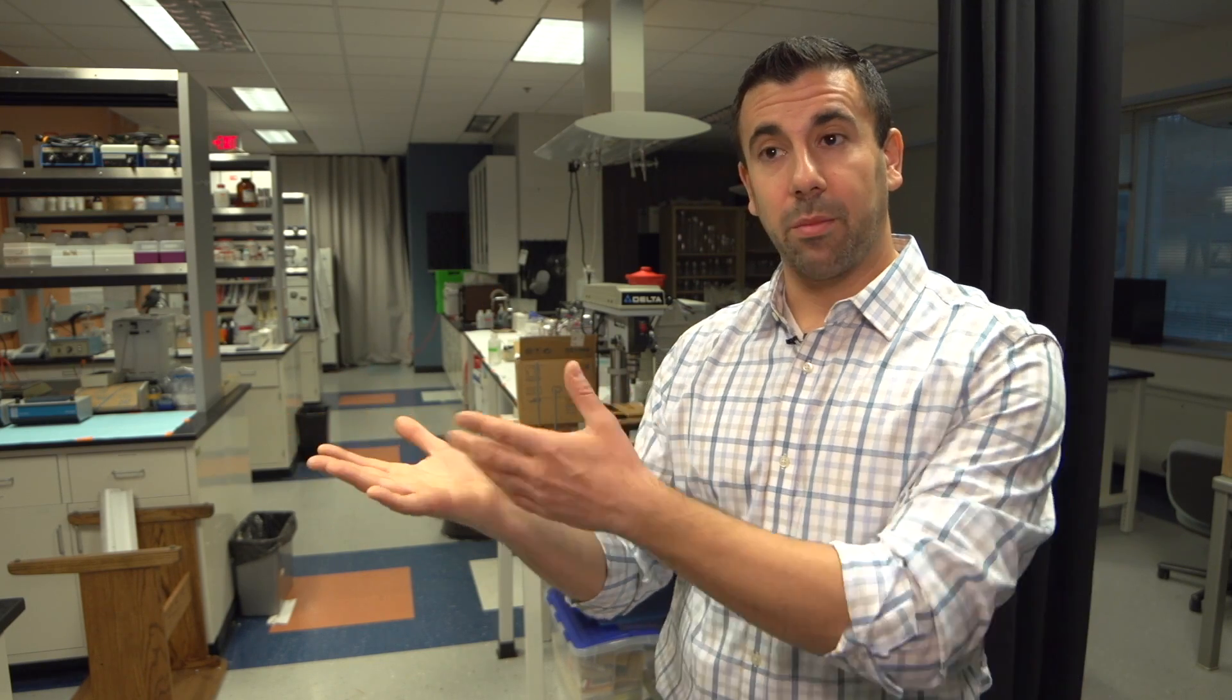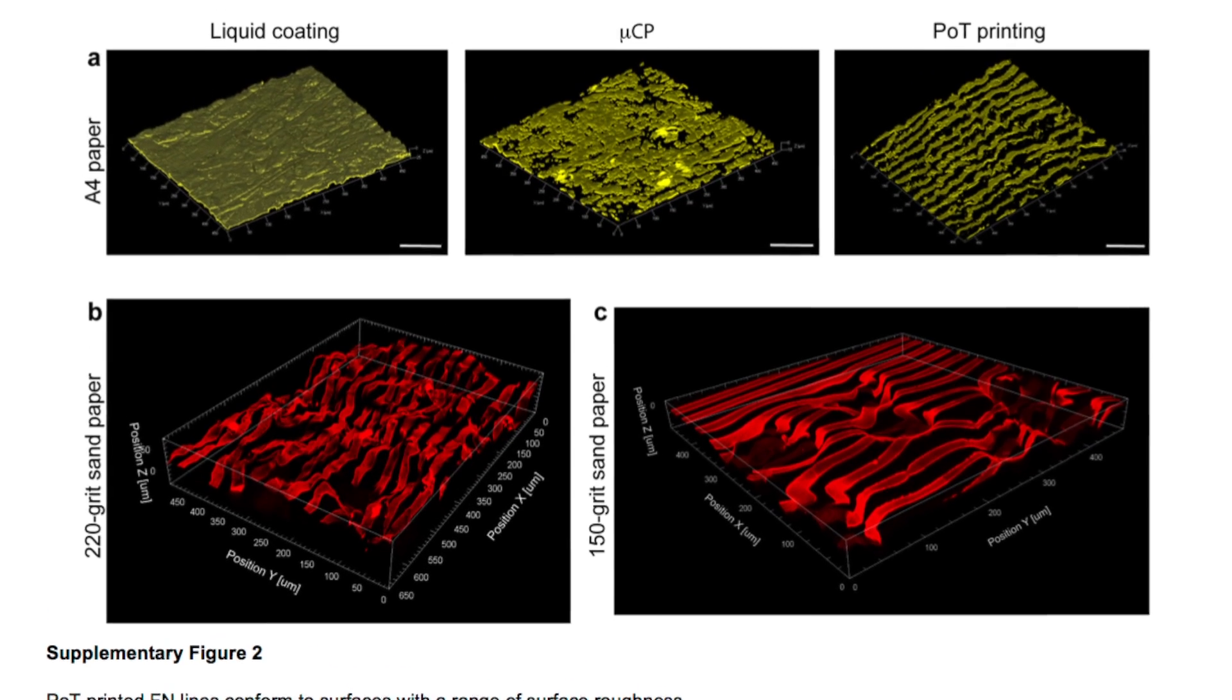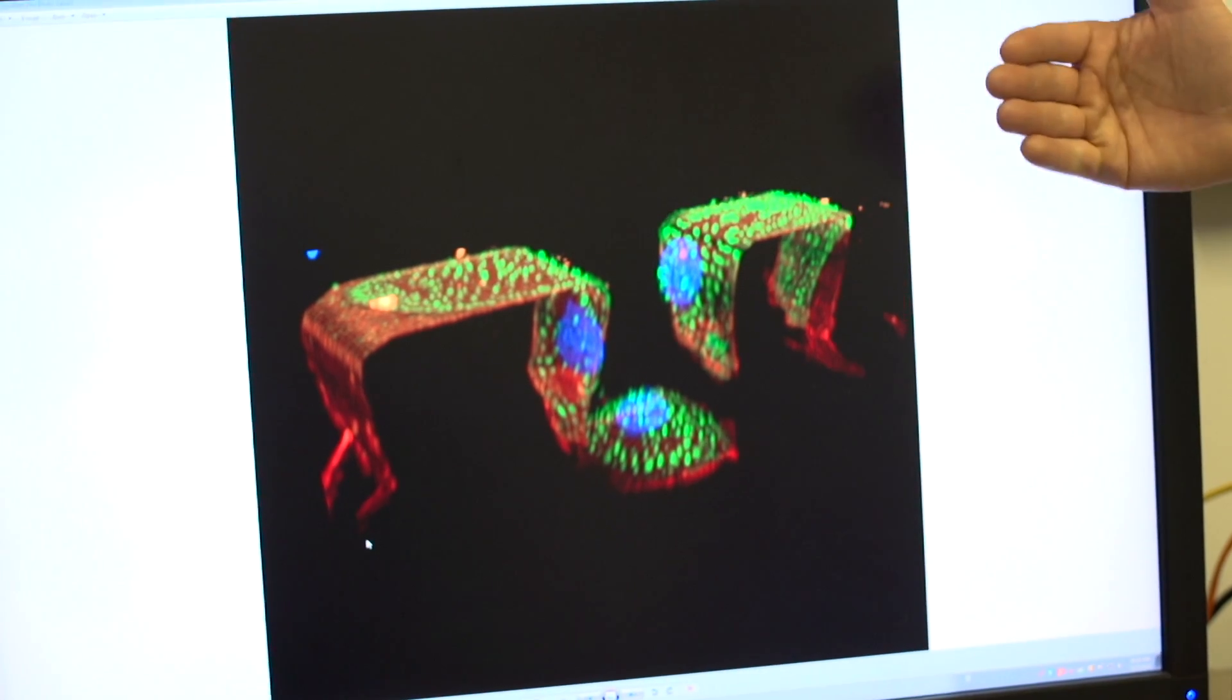What we came up with was a way to essentially stamp onto a flat surface and pattern proteins, and then put that onto a rough surface and then push that patterned protein onto the rough surface in arbitrary directions. And that's how we created this POT, or patterning on topography, technique.